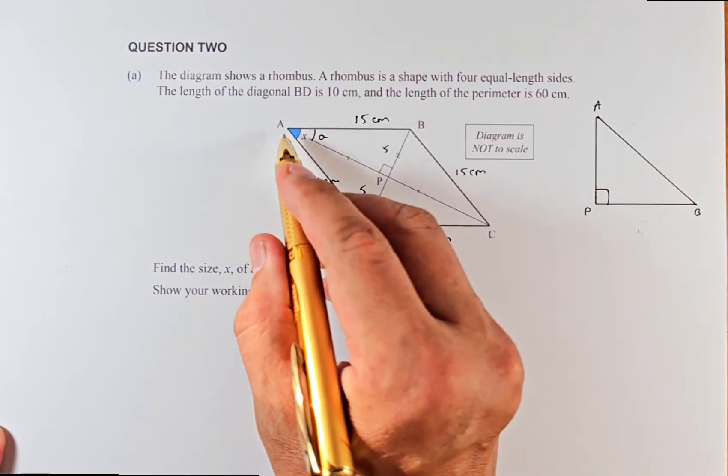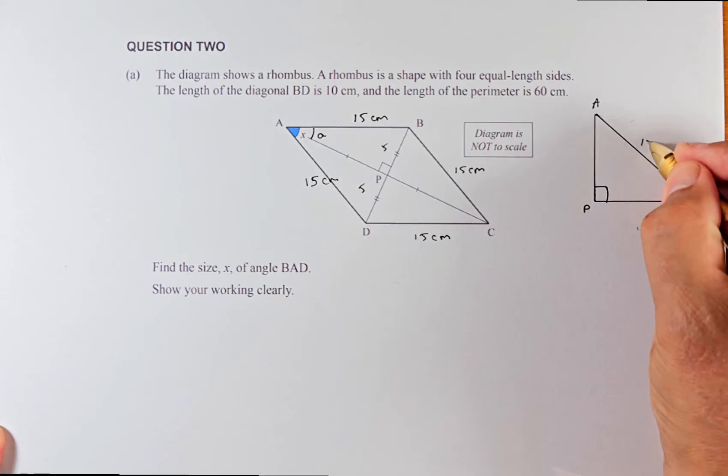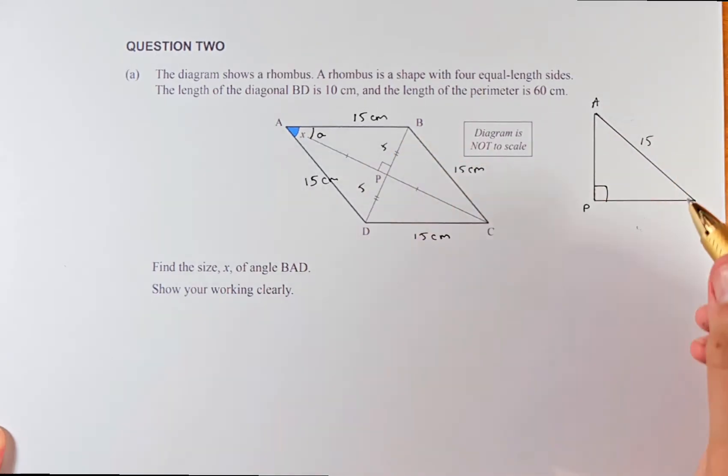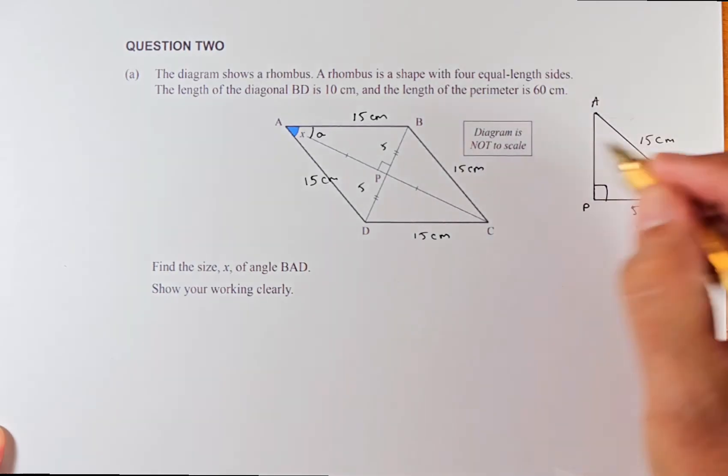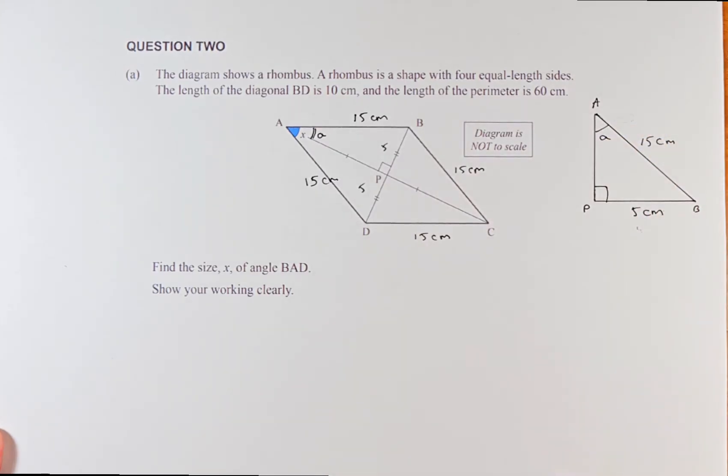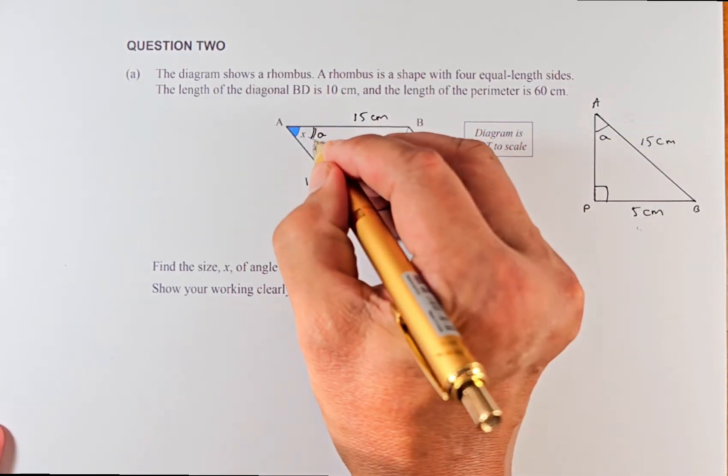This will be right angle, AB is going to be 15, and PB is going to be 5. Then we are going to find the angle little a, and this angle is also a because they are a perpendicular bisector.